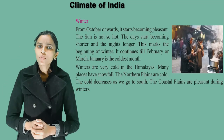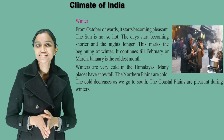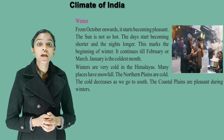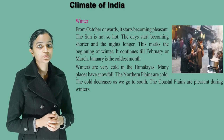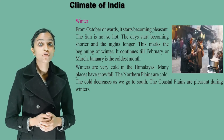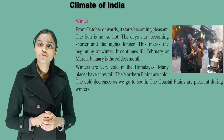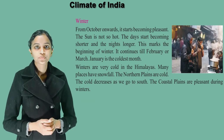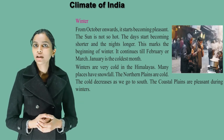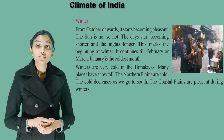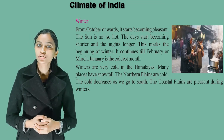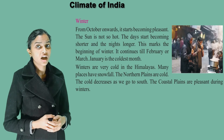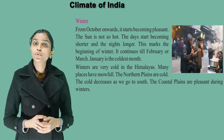Winter. From October onwards, it starts becoming pleasant — the sun is not so hot. The days start becoming shorter and the nights longer. This marks the beginning of winter, which continues till February or March. January is the coldest month. Winters are very cold in the Himalayas and many places have snowfall. The northern plains are cold, but the cold decreases as we go to the south. The coastal plains are pleasant during winters.